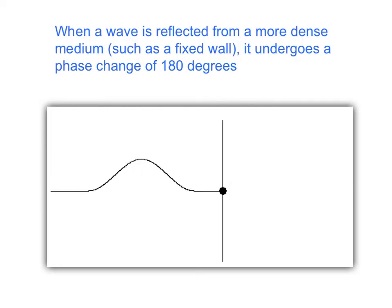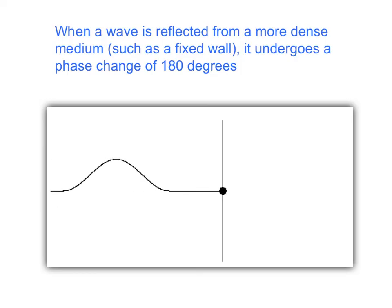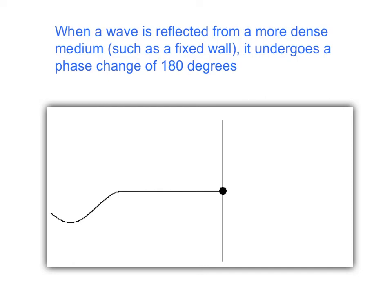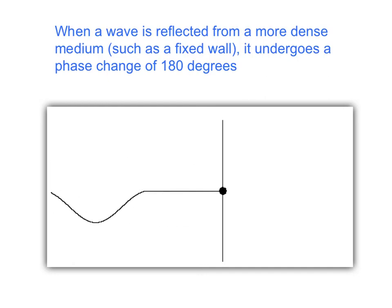When a wave is reflected from a more dense medium, such as a fixed wall, it undergoes a phase change of 180 degrees, meaning a crest will turn into a trough, or a trough will turn into a crest.